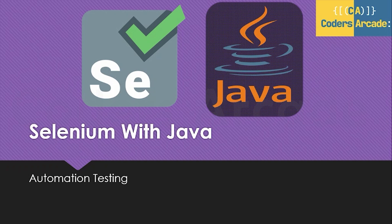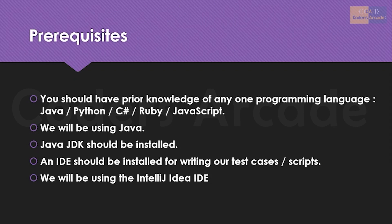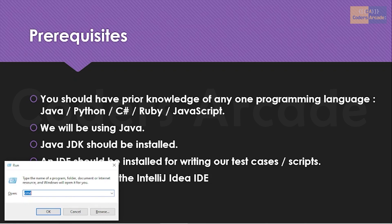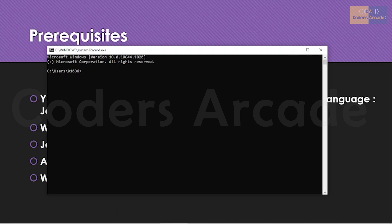This will be the first video on Selenium with Java, and there are certain prerequisites we need to follow before starting. The prerequisites are: you should have prior knowledge of any one programming language — Java, Python, C#, Ruby, or JavaScript — then you are good to go for Selenium automation. In our case we will be working with Java, so one more prerequisite is that you should have Java JDK installed in your system.